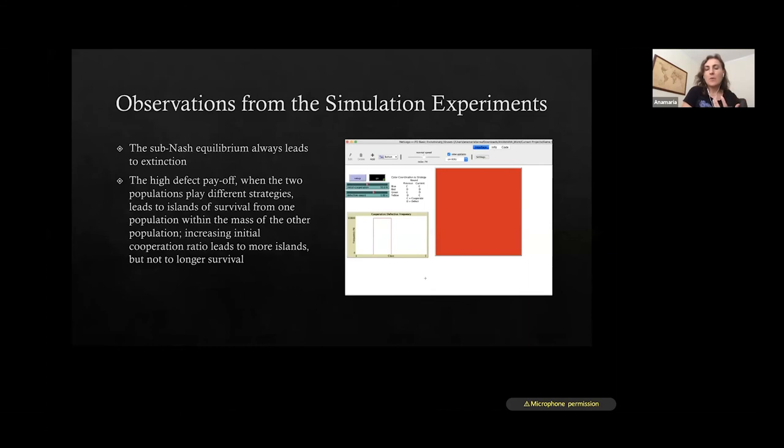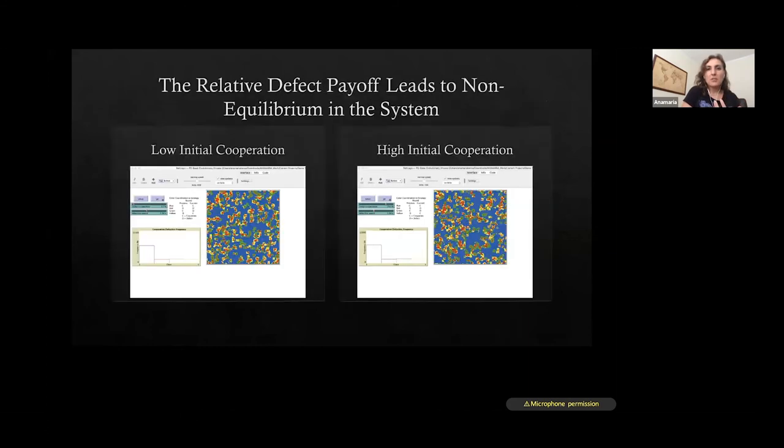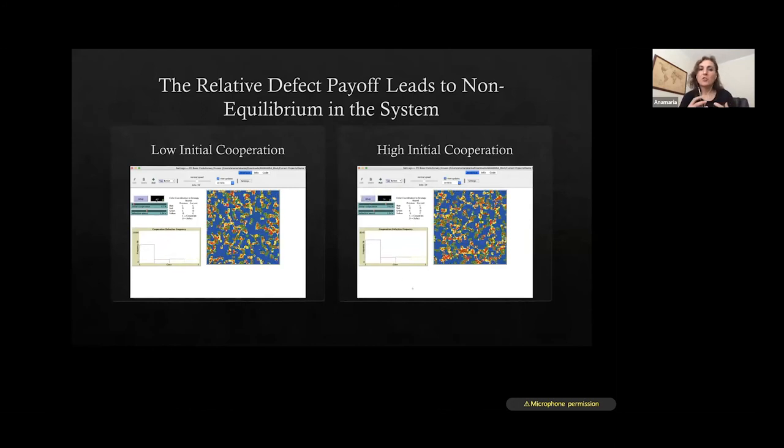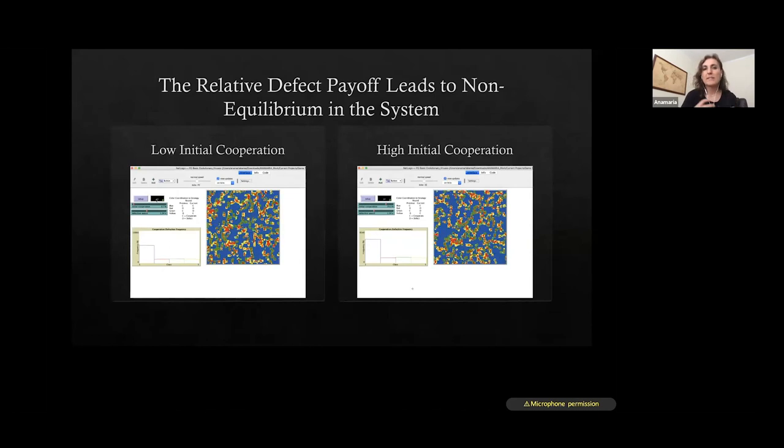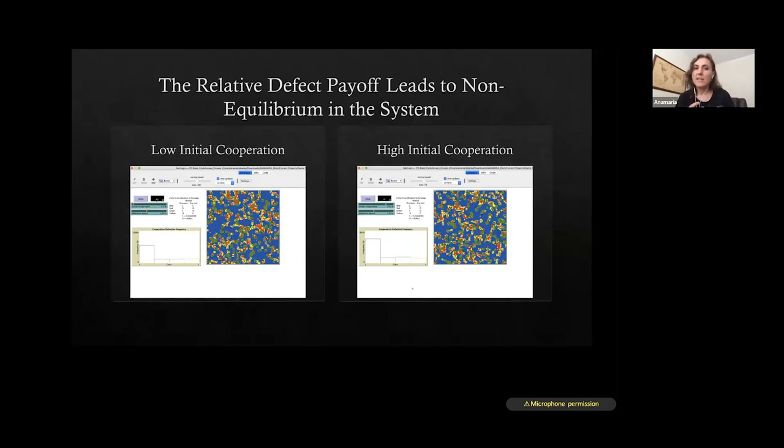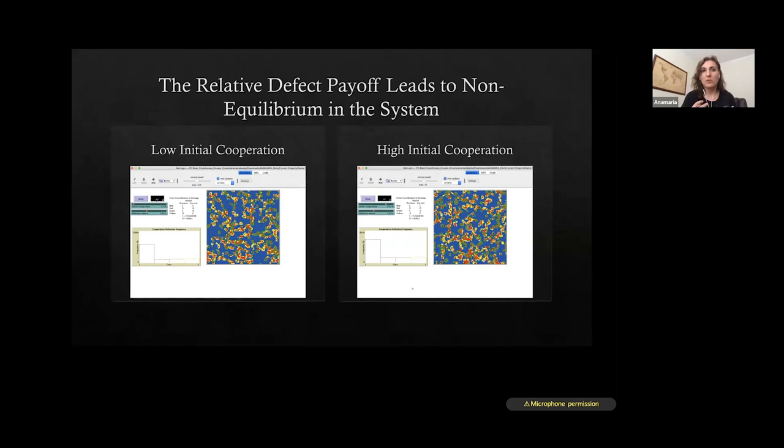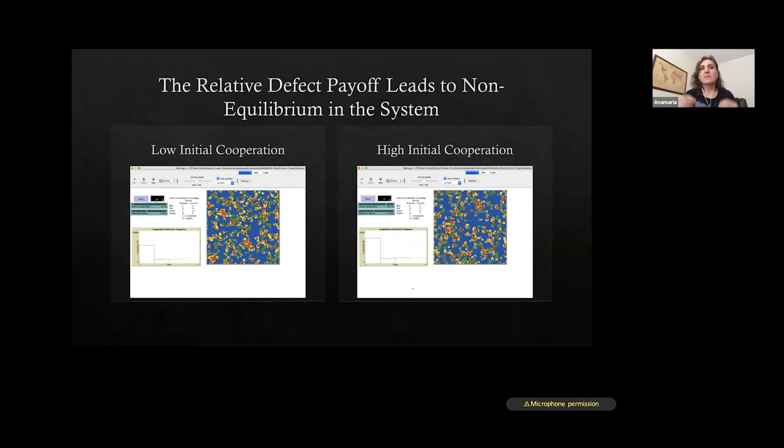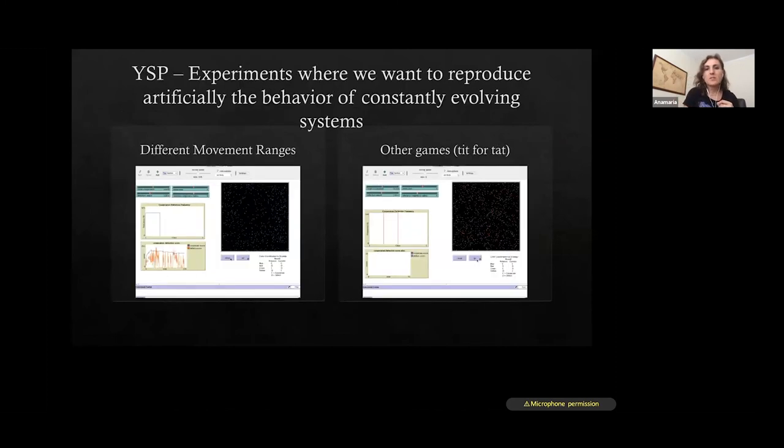And some observations from these simulation experiments is that the sub-Nash equilibrium that is classic in prisoner's dilemma always leads to extinction. The high defect payoff when the two populations play different strategies leads to island of survival from one population within the mass of the other population. And the increasing initial cooperation ratio leads to more islands, but not to longer survival. So we can do all these experiments in an artificial setting. And we can also look at low initial cooperation versus high initial cooperation and how these can lead again to these islands of non-stationarity or non-equilibrium. So we can let these systems to run and run and run and they will never settle and they will keep on evolving. So what we noticed is that this relative defection payoff leads to non-equilibrium in the system.